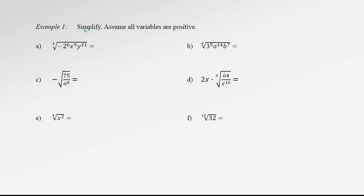Let's use this method to simplify the following radicals, assuming all variables are positive. For the cubic radical of negative 2 to the 6 · x to the 9 · y to the 21: any odd-degree radical of a negative number results in a negative answer. So let's record this negative and move on. For 2 to the 6: dividing 6 by 3 gives 2, so we can pull out 2 to the 2 with no remainder — nothing is left over from this power of 2.